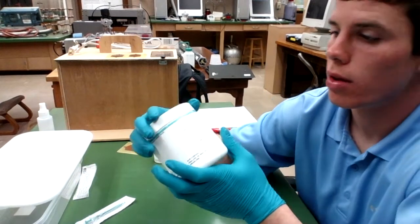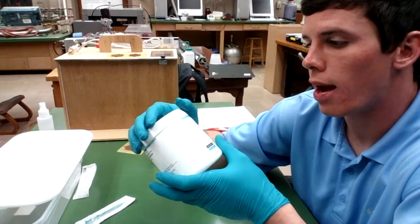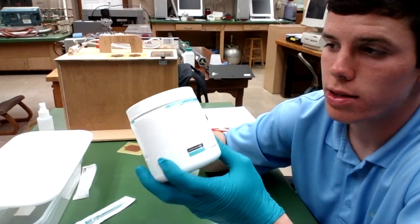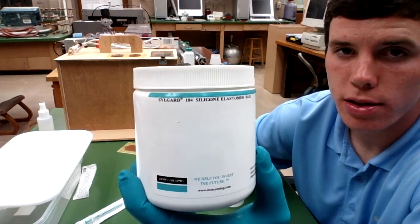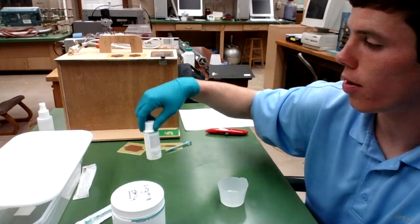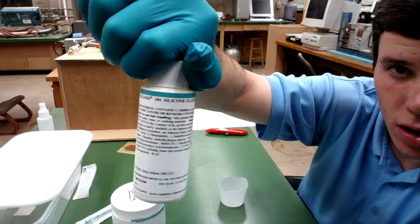This mixture will be made at a 10 to 1 ratio: 10 parts Silgard-184 silicone elastomer base from Dow Corning to one part Silgard-184 curing agent.